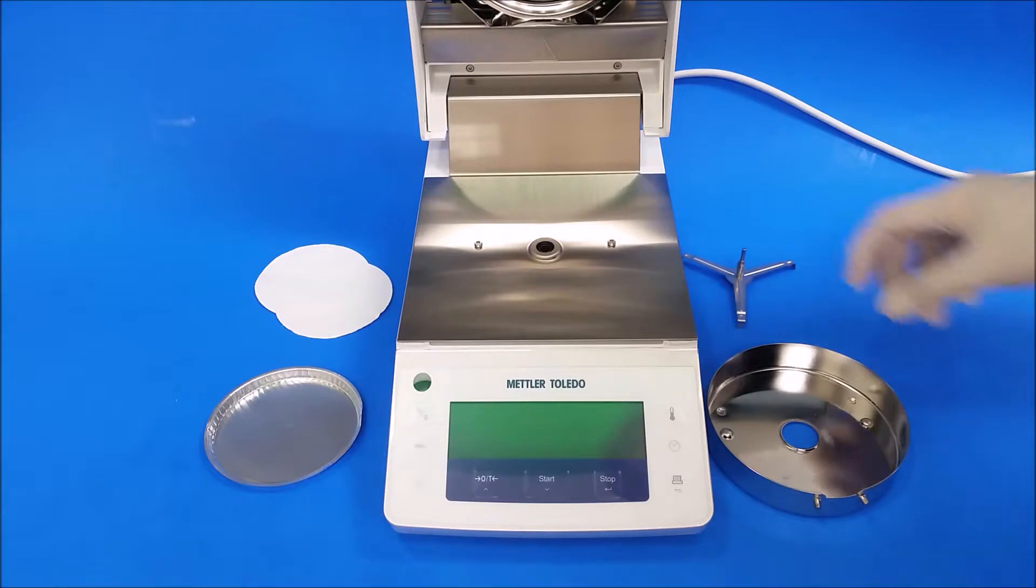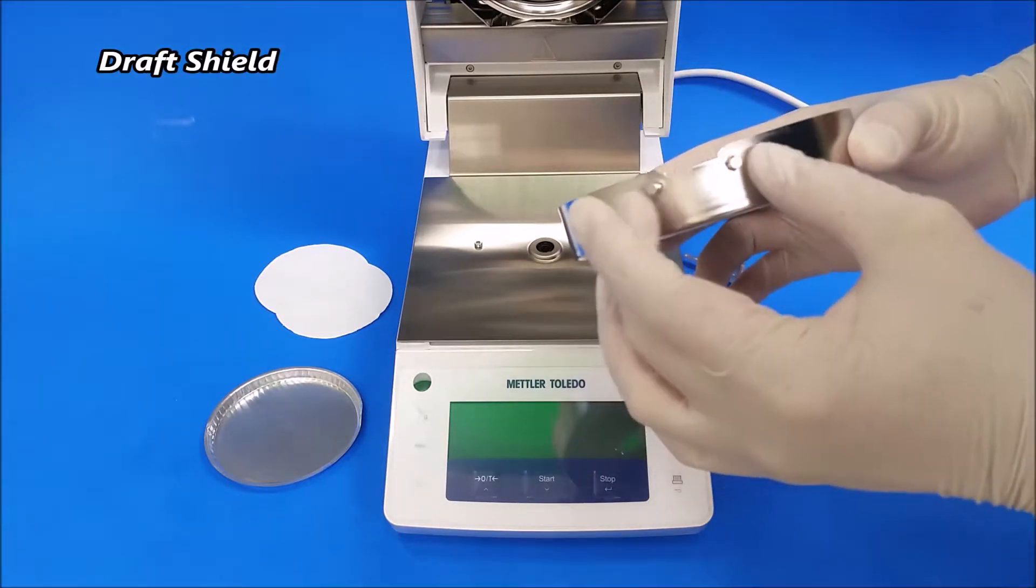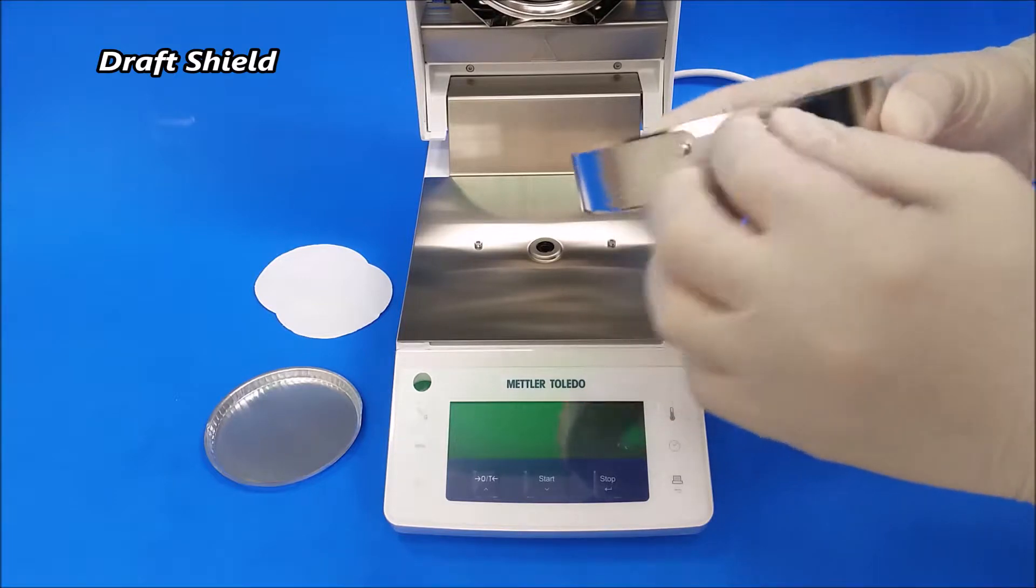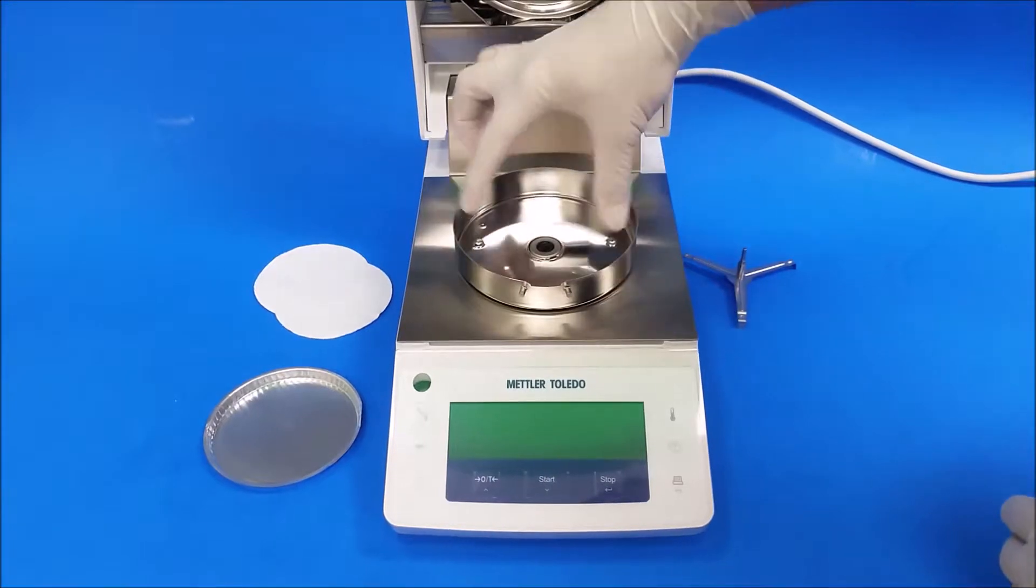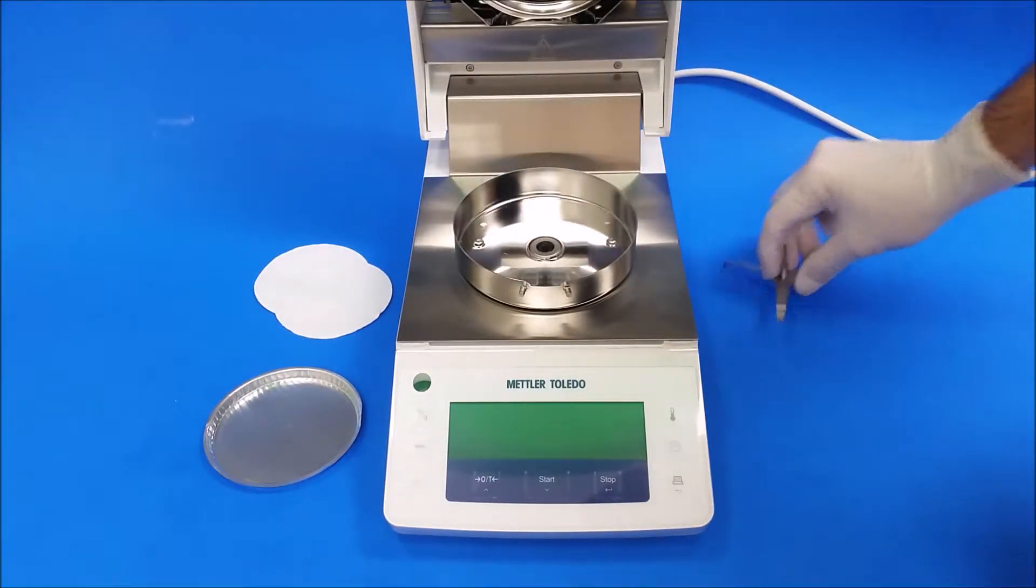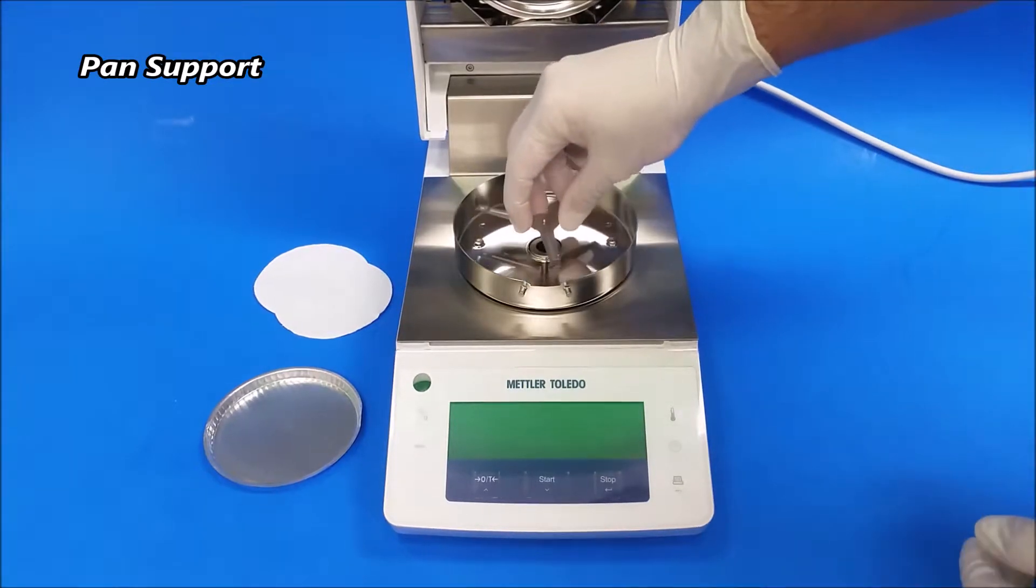First piece is the draft shield. It's going to have these little two rods stuck to each other. Make sure it's pointing towards you when you're putting it in. Align it to the two screws that are in there. Next piece is the pan support, just put it in here gently and spin until it drops.